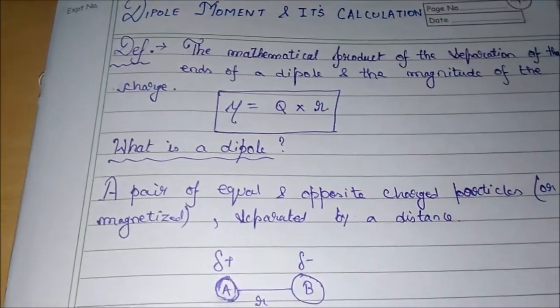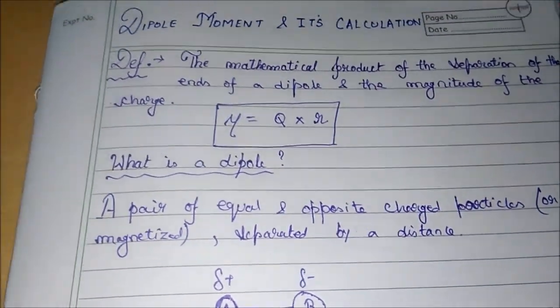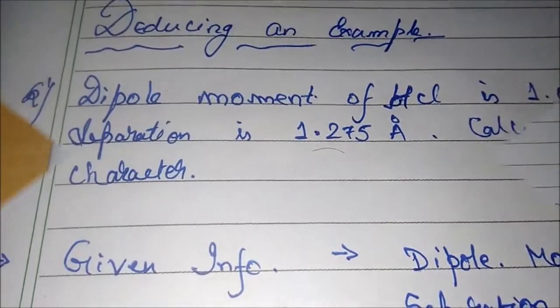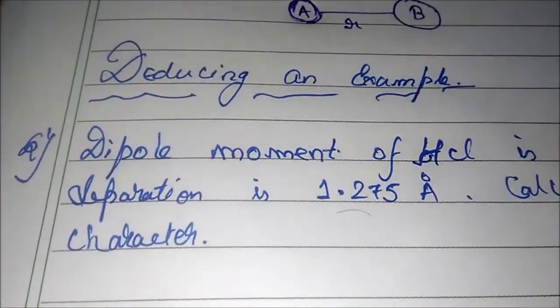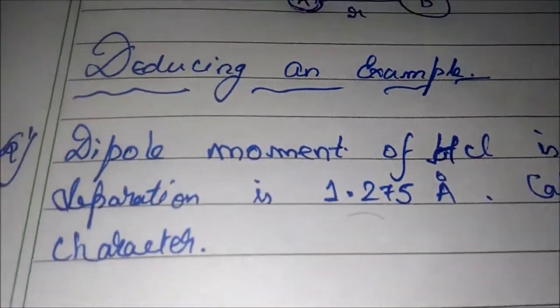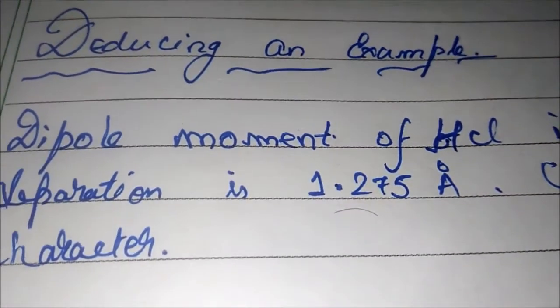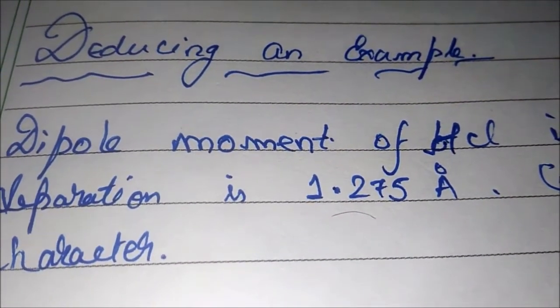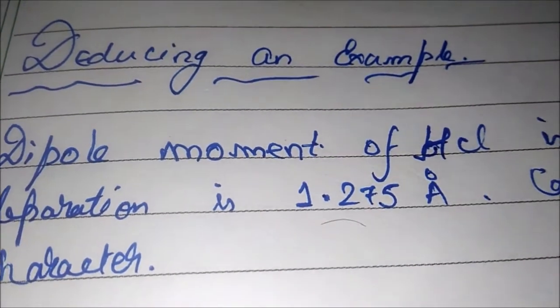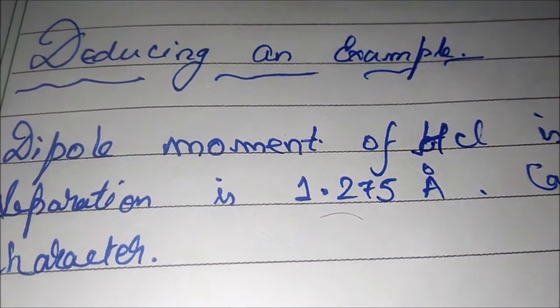Now let us see how we can use it for calculation purposes. So we are in the example section, and I have said that there is an application of dipole moment. One of the very important applications of dipole moment is to calculate how much percentage of ionic character a particular given set of molecules have.